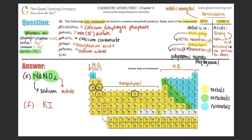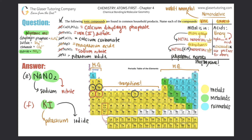Last one — compound F: KI. K is potassium, also a main group metal, so no Roman numeral. Then iodine (I) is not a polyatomic — it comes straight from the periodic table — so iodine gets the -ide ending: iodide. Compound F is potassium iodide. And that wraps up problem 32!